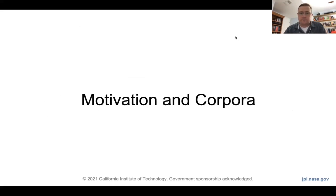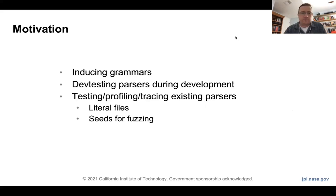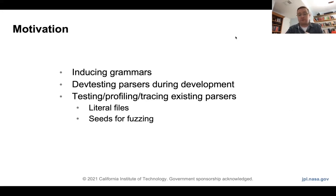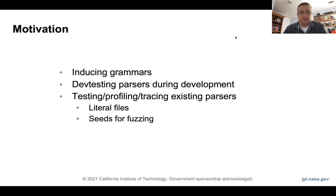Why are we bothering gathering a bunch of files and making them searchable? When developing secure parsers, if you want to reduce grammars, do any dev testing of parsers in development, or do testing, profiling, or tracing of existing parsers, it's really helpful to have a whole bunch of files that represent a broad spectrum of the various file formats available in the world — whether you're using the literal files or using those files as seeds for fuzzing.